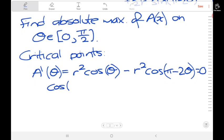So that means cosine of theta equals cosine of pi minus 2 theta.